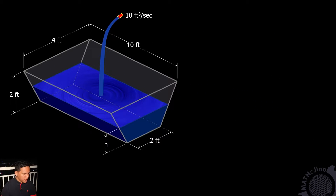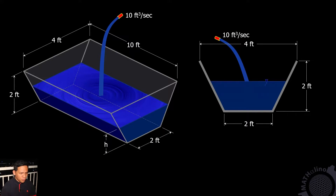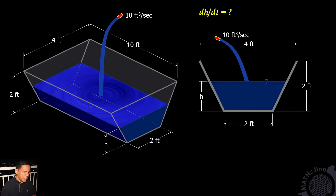Water flows into this trapezoidal trough at the rate of 10 cubic feet per second. This is the cross-section of the trough. As the water flows in, the depth of water inside the trough will go up. We call this depth h. We are required to find how fast this depth is rising — that is dh/dt — when the depth is 6 inches.